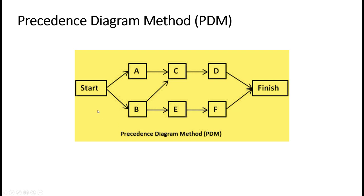Here is one example of a Precedence Diagram Method. In this simple diagram, a project starts from the left-hand side. This is a predecessor which will have some successors — A and B — and predecessor A will have some successors. Likewise, it will keep flowing through, with B having successor E and F, and B also having successor C, until the project ends at the finish line.